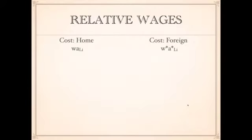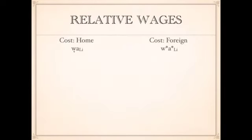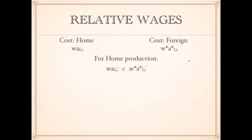How do we actually determine what the costs are? Costs are just going to be equal to the wage rate multiplied by the unit labor requirement for that particular good being produced — subscripted i for good one, good two, good three, and so on. So if we want to know the cost in the home country, we multiply the wage rate by the unit labor requirement aᵢ. We do the same thing for the foreign country: the foreign wage rate multiplied by the foreign unit labor requirement.